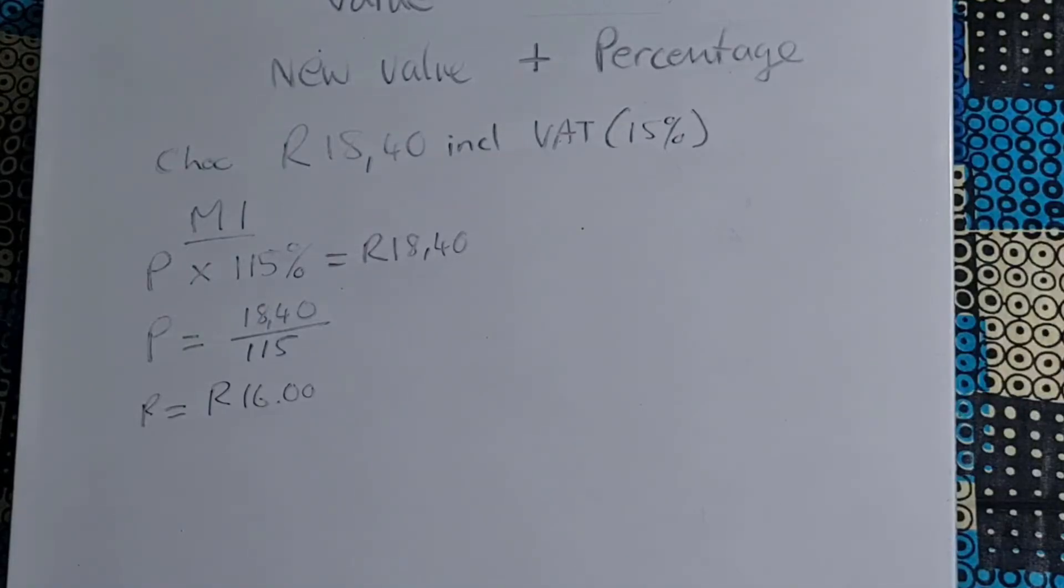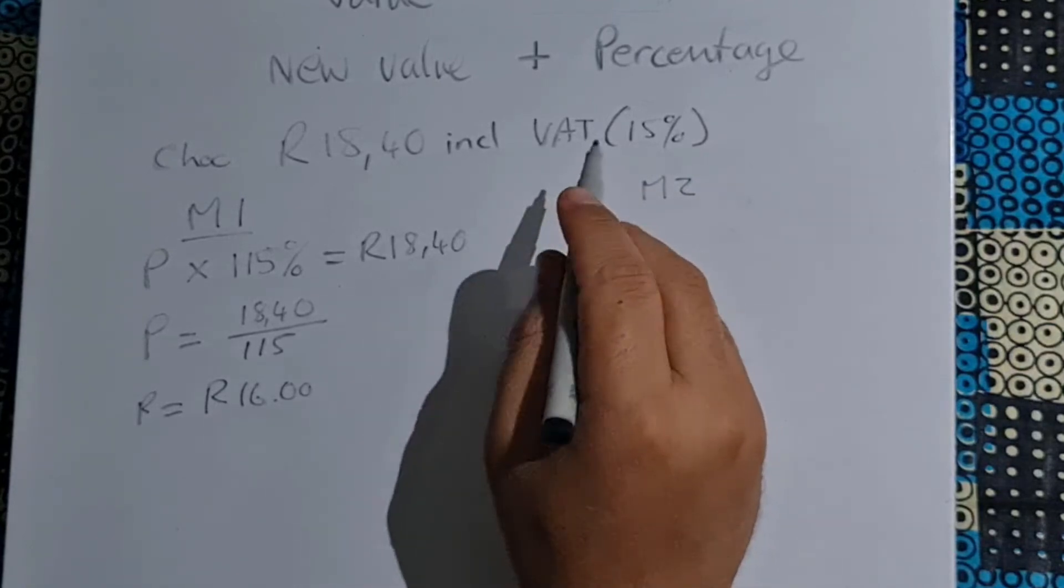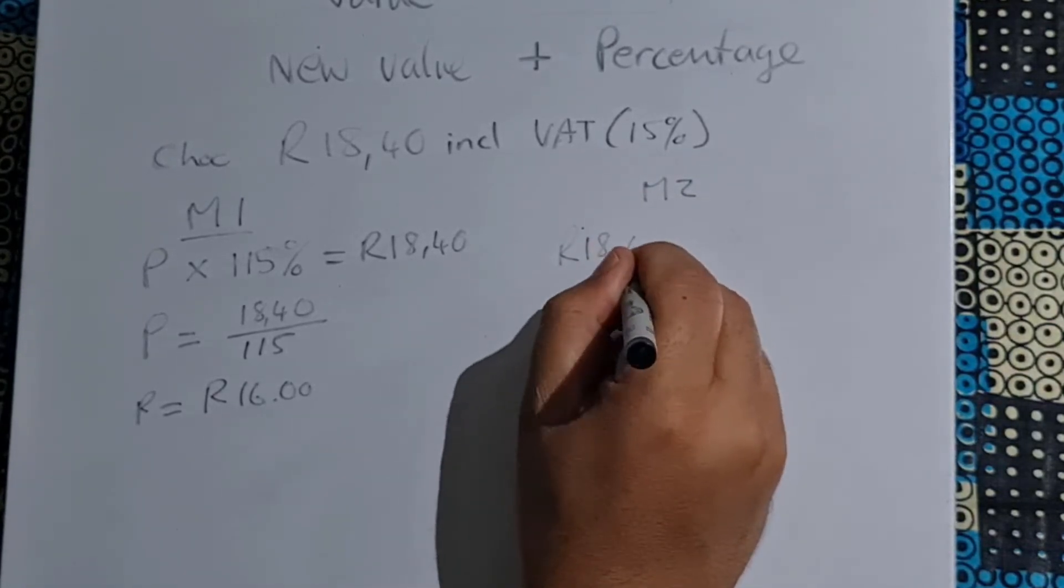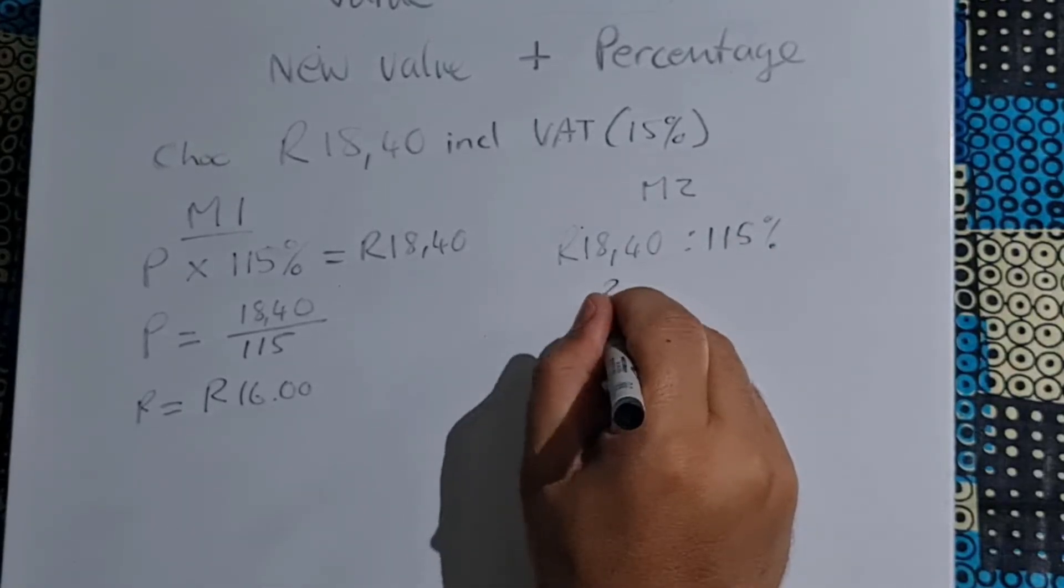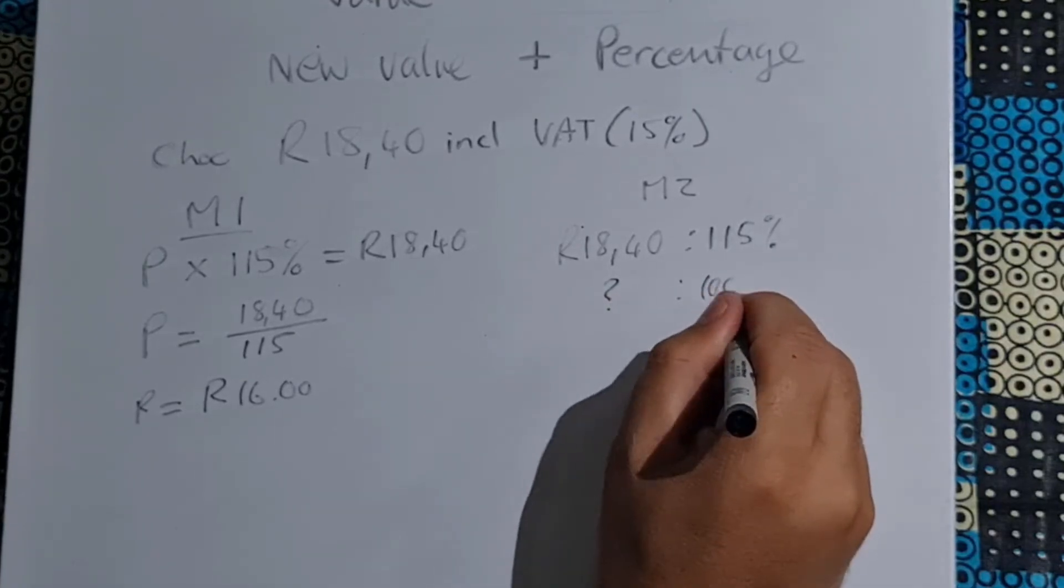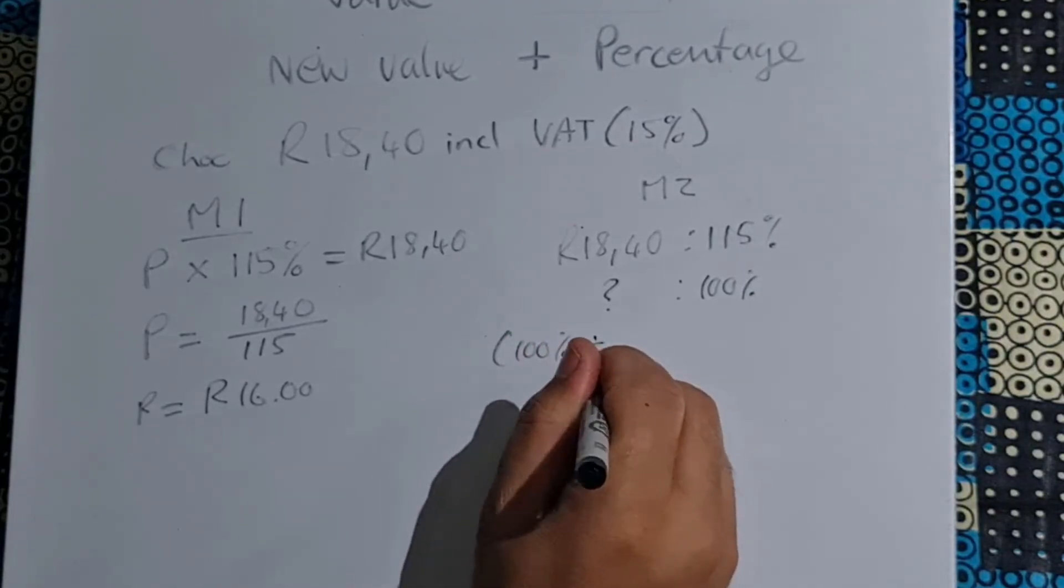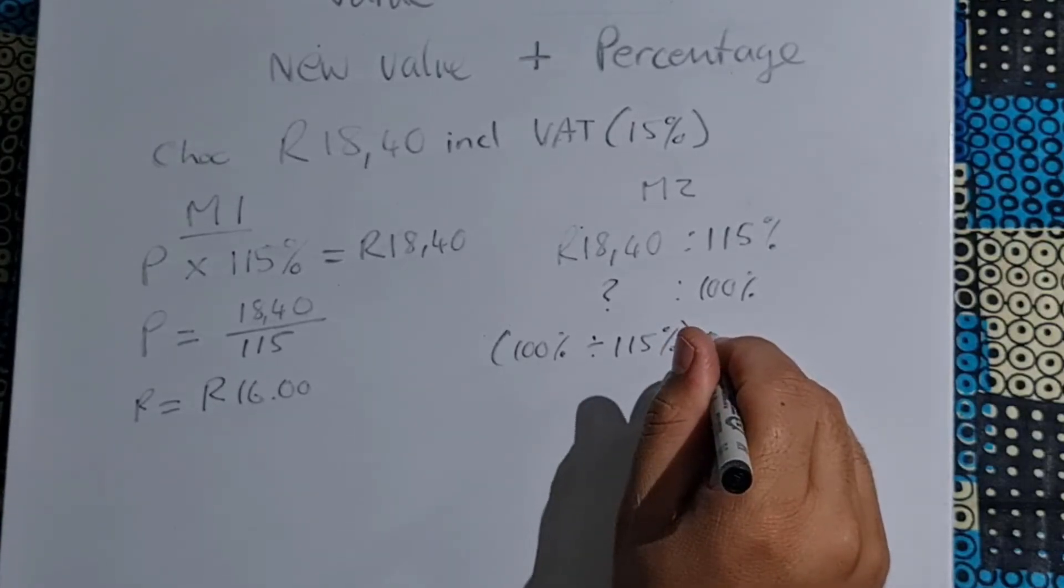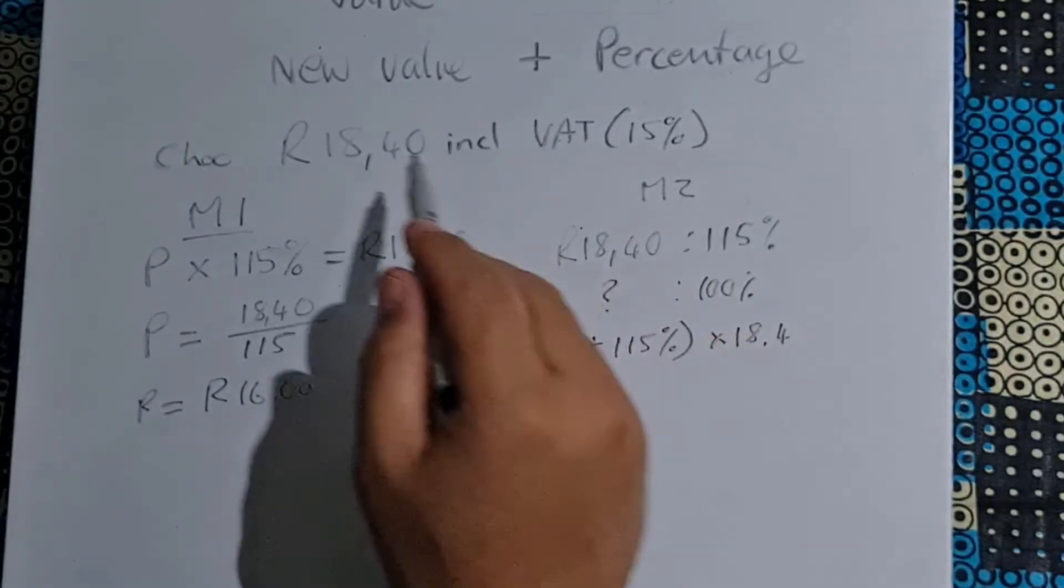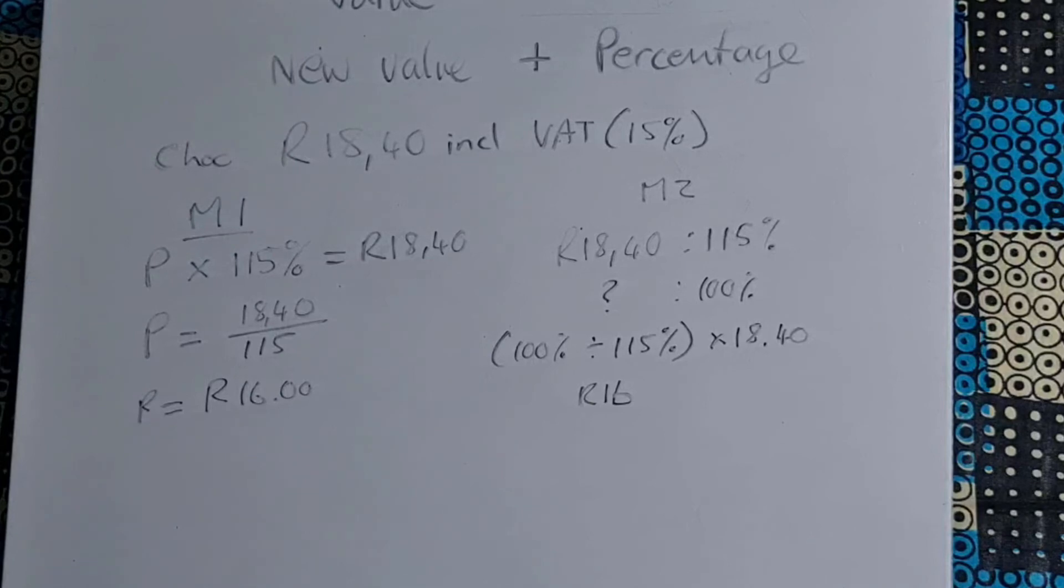The other way we can do this is through one of the other methods. R18.40 is 115%, but we don't know what the 100% is. So what did we do in our previous examples? We took the 100% and said we're going to divide that by 115%, and then whatever that answer is we are going to multiply that by our original amount R18.40, and we'll get R16.